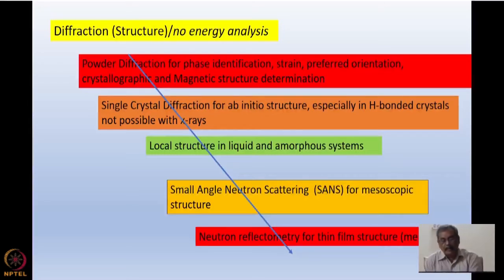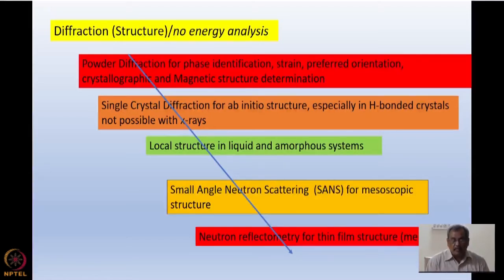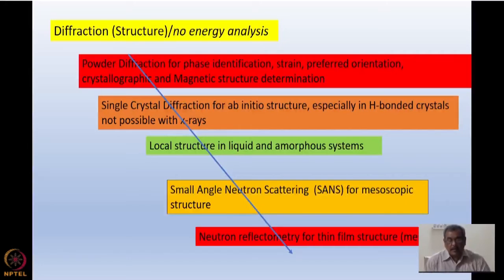Another important thing is local structure in liquid and amorphous systems. This is extremely important for neutrons because for determination of local structure you need to go to very high Q, and neutrons have an advantage that they can penetrate deep. Since neutrons can penetrate deep, we can take a reasonable dimension of a sample which will give the bulk liquid or a bulk amorphous system, and we can find out the local order in this system. I will introduce you to this technique with large Q-range experiments to find out local structure.